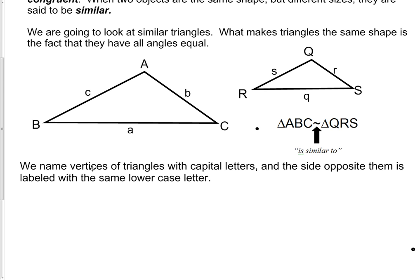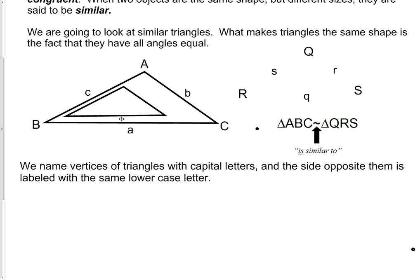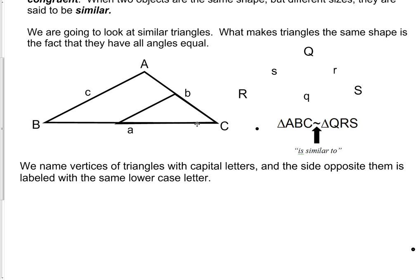We name vertices of triangles with capital letters, and the side opposite them is labeled with the same lowercase letter. It's important that they all go in the order of the equal angles. Since A comes first, the angle that corresponds to A — which is Q — has to come first when we name the second triangle. B comes second in the middle, and the angle that corresponds to B is R, so it comes second. Then by process of elimination, the third angle is C, and the corresponding angle is S. So triangle ABC is similar to triangle QRS.